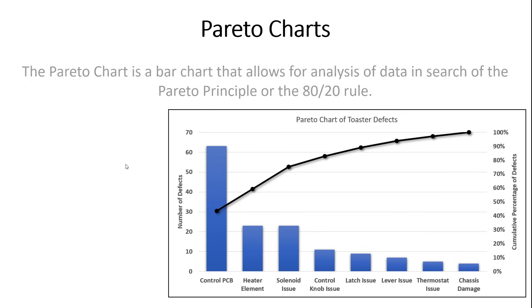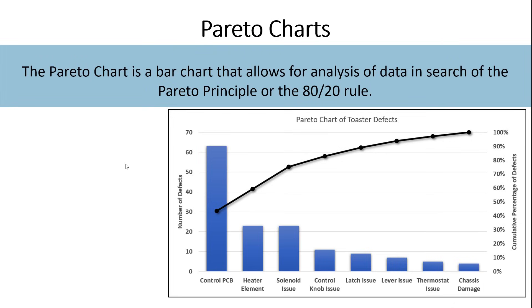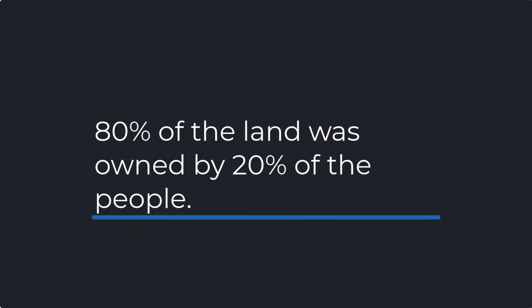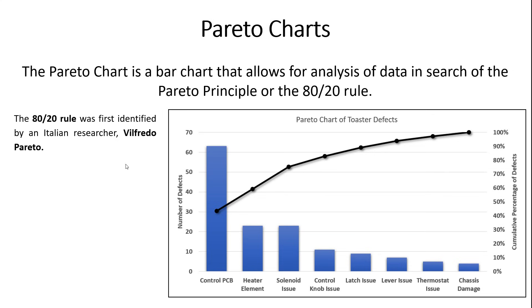So the real question is, how do we know what to focus on? And that's where the Pareto chart comes into play. The Pareto chart is another QC tool that allows you to analyze your data in search of the Pareto principle. So what is the Pareto rule, the 80-20 rule? This is a natural phenomenon that was discovered by a guy named Vilfredo Pareto.